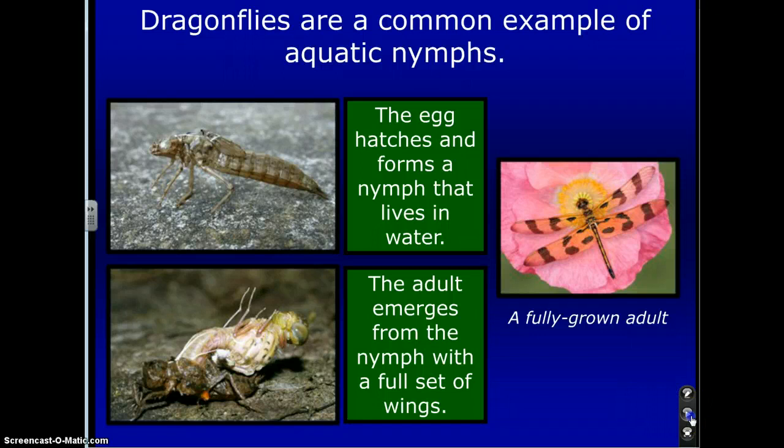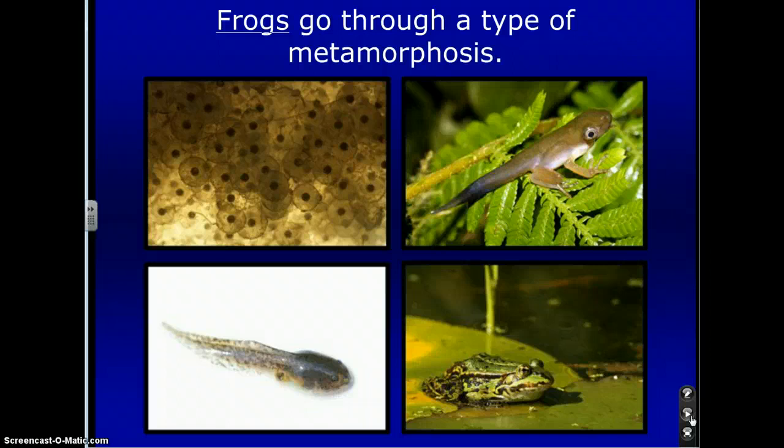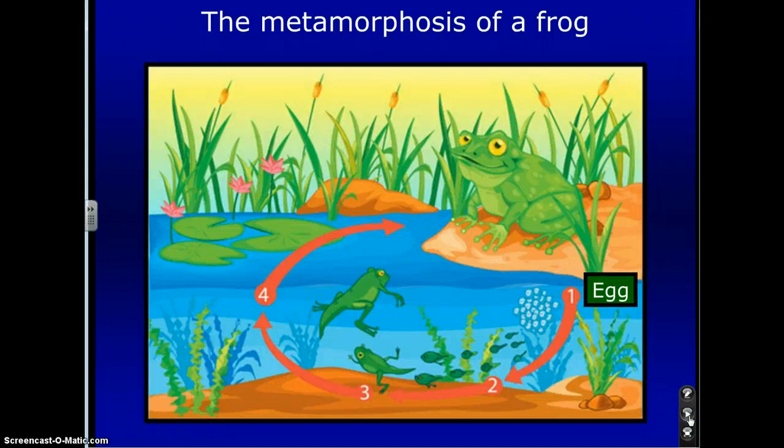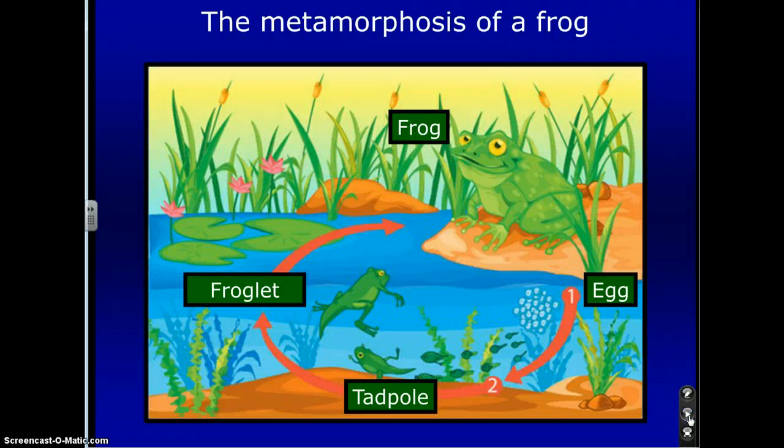Frogs also go through a type of metamorphosis — you may have talked about this in earlier grades. Looking at the diagram, they hatch as an egg, turn into a tadpole, then into a froglet, and eventually into the adult.